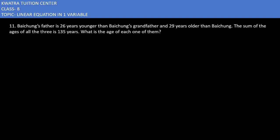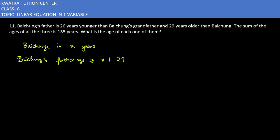Baichung's age is X years. Baichung's father's age is 29 years older than Baichung, so it is X plus 29. Now, Baichung's grandfather's age would be X plus 26 plus 29.